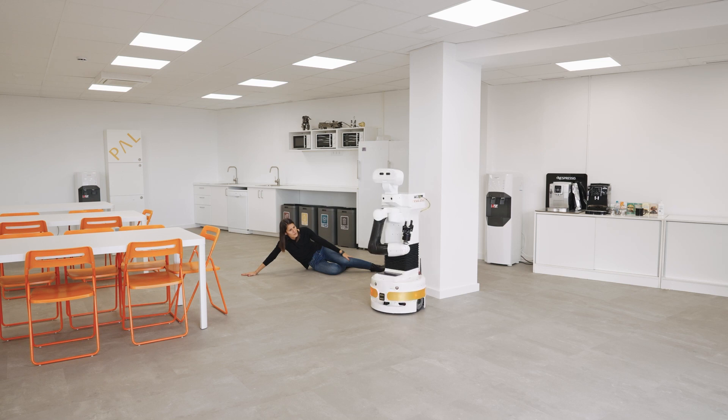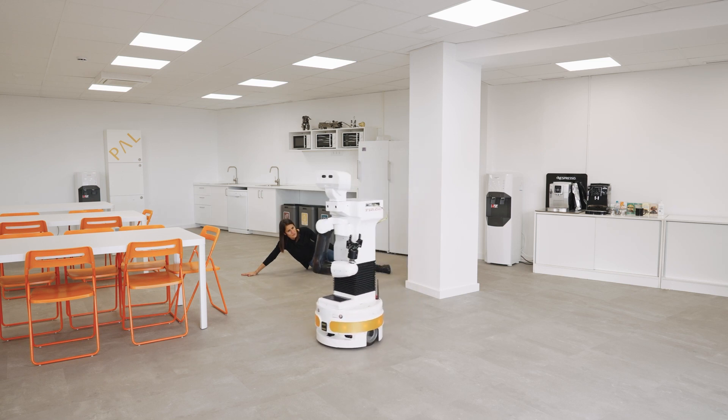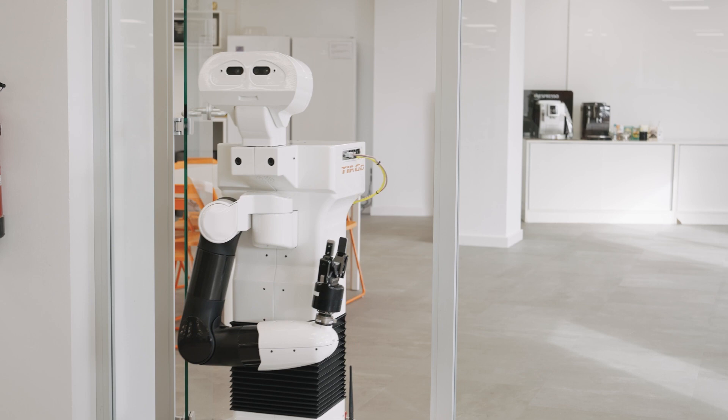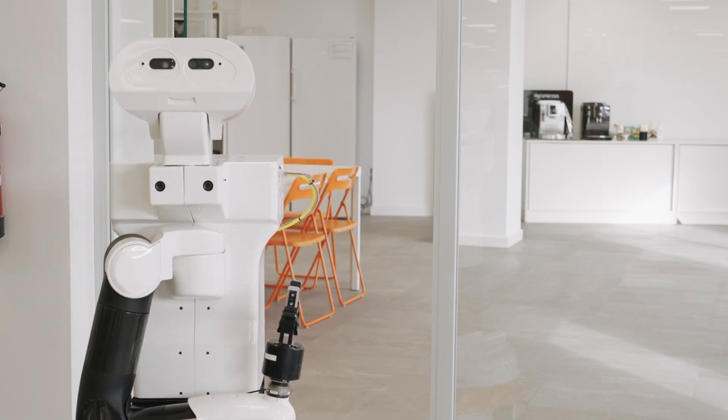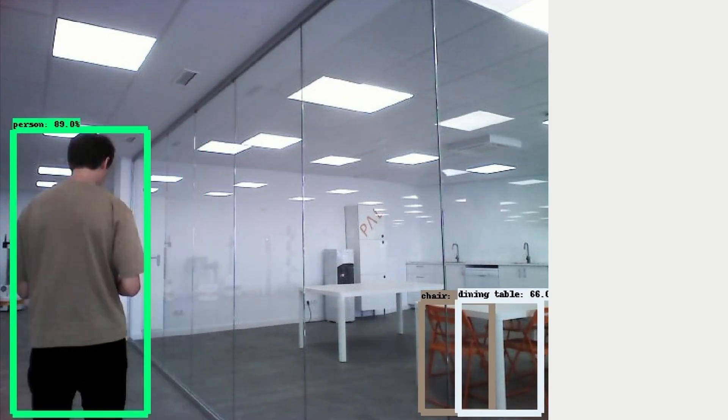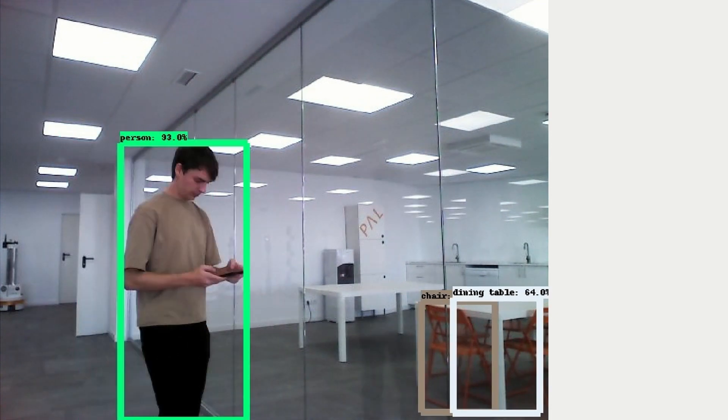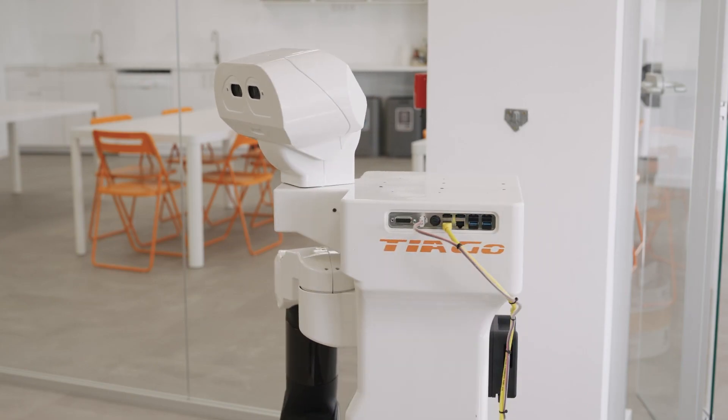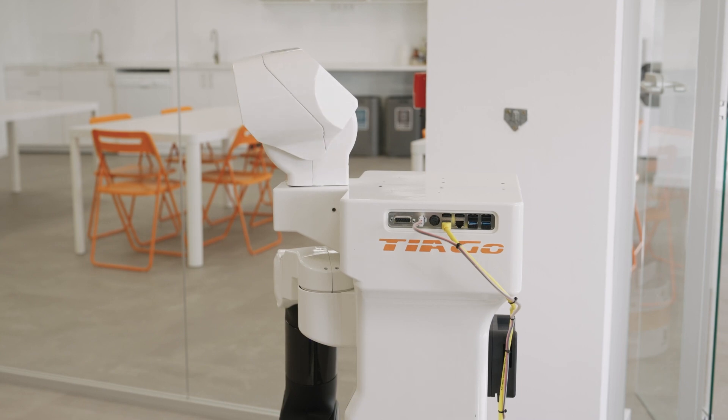When a person is detected on the floor Tiago will look for help. If Tiago encounters a person, he will explain the issue and ask the human to assist.